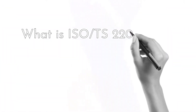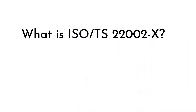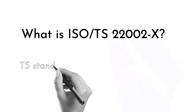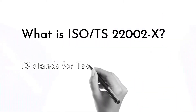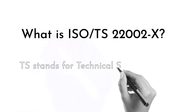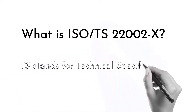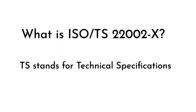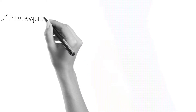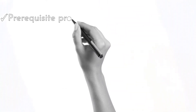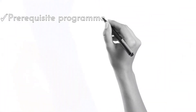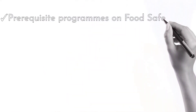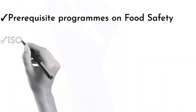Starting formally: what are the ISO Technical Specifications 22000? TS stands for Technical Specifications, as the name suggests. These are the prerequisite programs in food safety that are very essential for the implementation of a food safety management system.